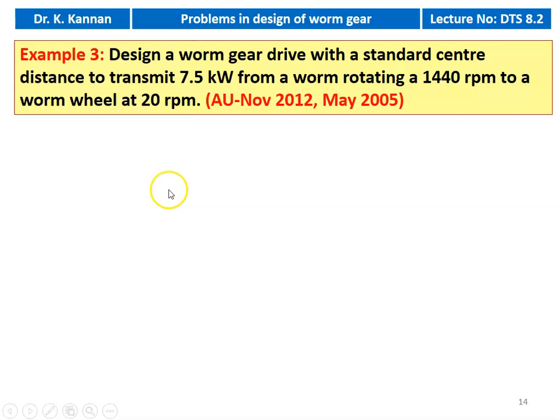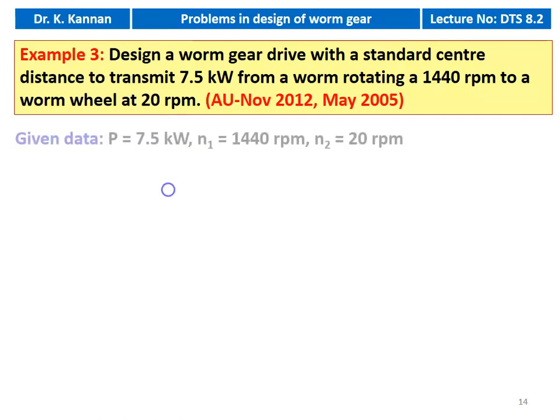Example number 3, from question papers November 2012 and May 2005. Design a worm gear drive with a standard center distance to transmit 7.5 kW from a worm rotating at 1440 RPM to a worm wheel at 20 RPM. Given data: power = 7.5 kW, worm speed = 1440 RPM, wheel speed = 20 RPM.